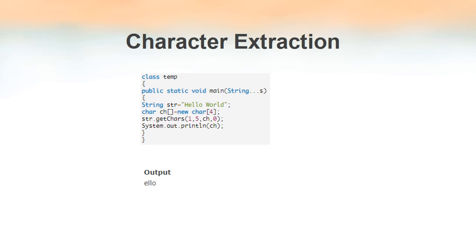The output of the program is 'e l l o'. Even though the end index is 5, which points to the space character, that character is not included. The getChars method copies characters from the starting index up to but not including the ending index. So characters at indices 1, 2, 3, and 4 — that is 'e', 'l', 'l', 'o' — are copied and pasted into array ch from index 0.